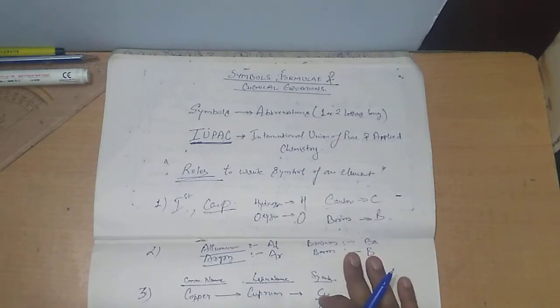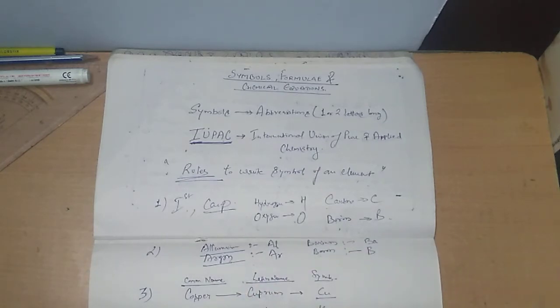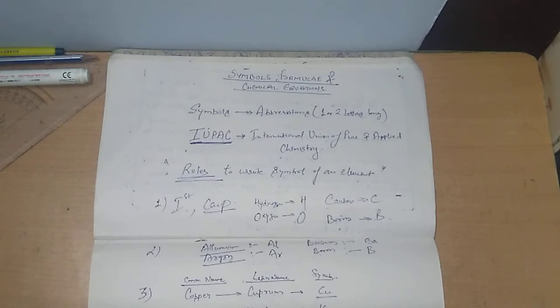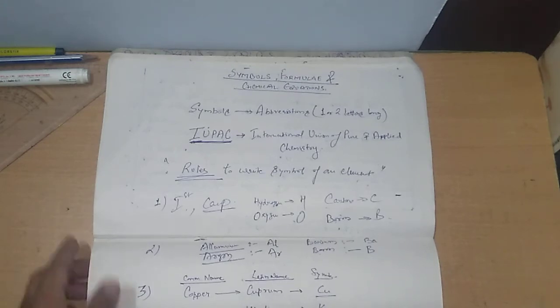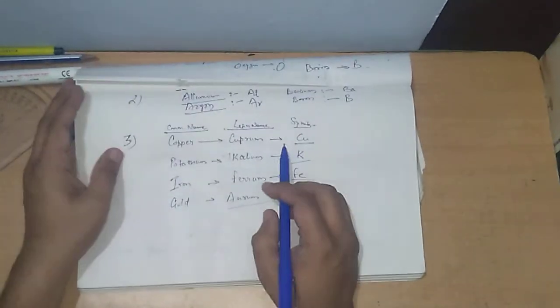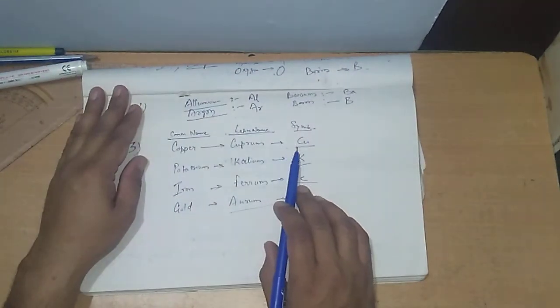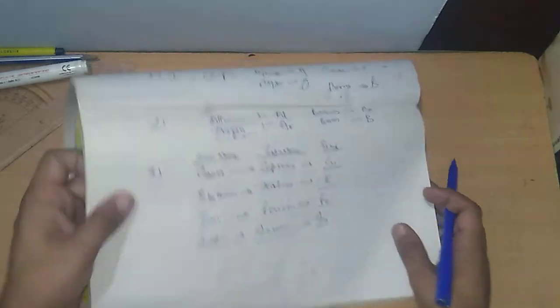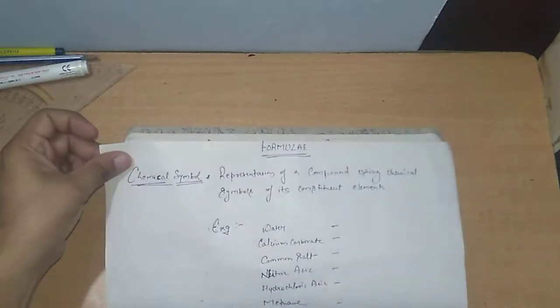Some symbols of elements are derived from their Latin names. For example, copper, iron, gold, and potassium have symbols derived from their Latin names. Today we are going to continue our discussion with chemical formulas.